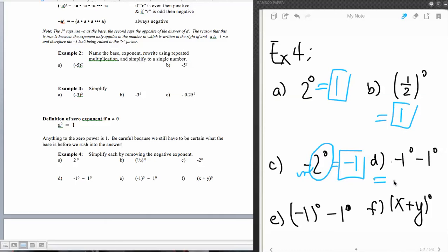Now this one is going to put in order of operations too. This says the opposite of 1 to the zero power, which is a negative one, minus one to the zero power, which is a one as well. So this says a negative one plus a negative one, which is a negative two.